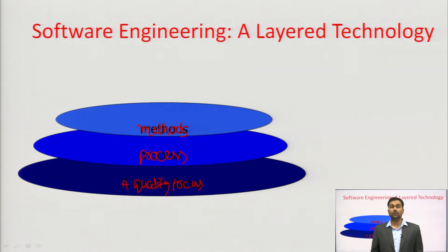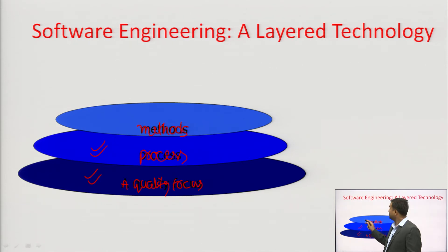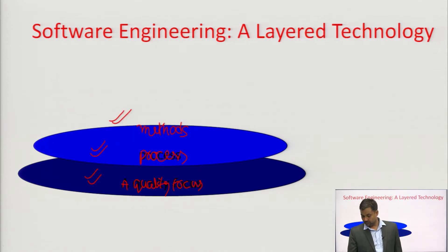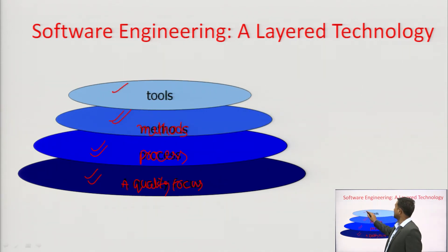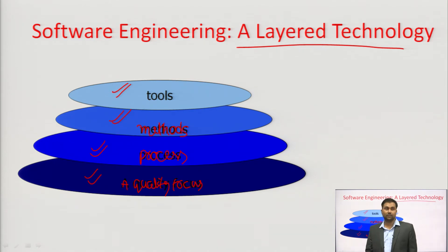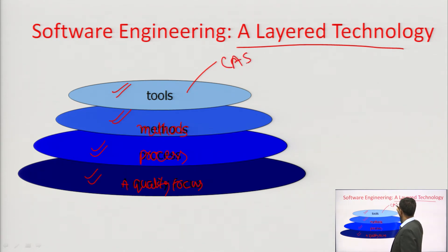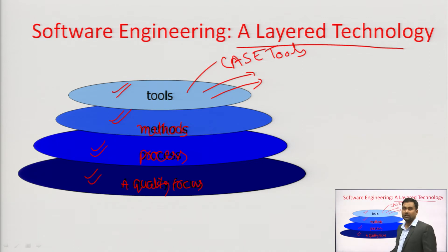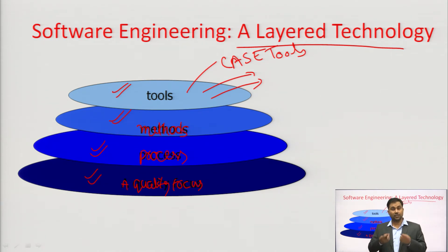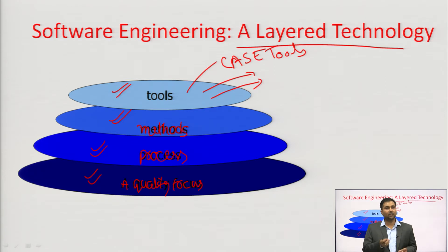Which model is better and why — we will explain in the future. The sequence is: first quality focus, then apply the best process, then which method to apply, and after that which tools to use. There are many CASE tools for design documents, multiple tools for software development, IDEs, deployment tools, test case tools, and automation scripts for running test cases.